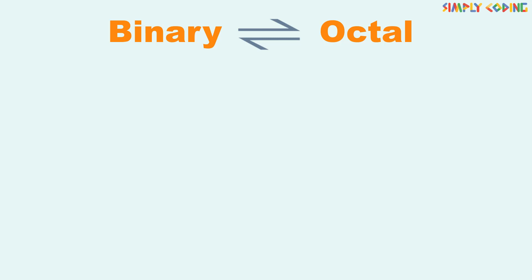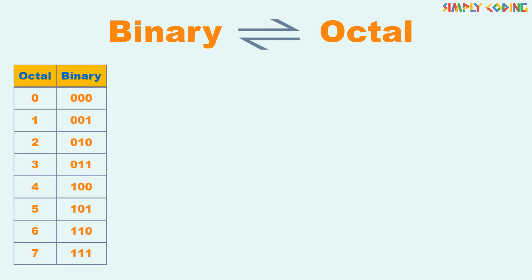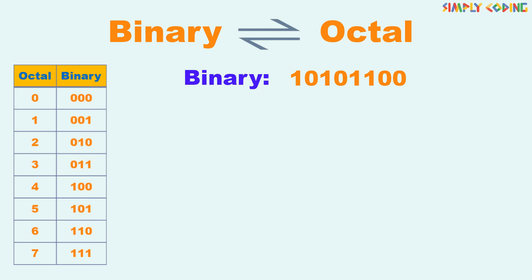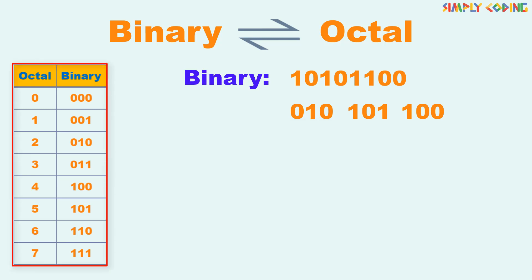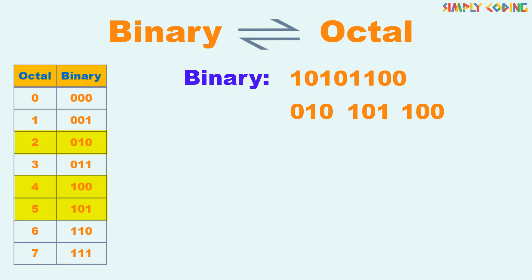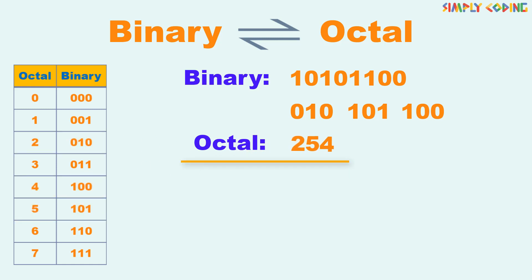Next let's learn how to convert binary to octal and vice versa. Before doing the conversion, you should know the binary equivalent for octal numbers 0 to 7 — let's note it down first. Note that each octal number is represented by 3 binary digits. Let's take a binary number which we want to convert to octal. First we split the binary values into groups of 3 starting from the right-hand side. If the last group has less than 3 digits, then just append 0 at the end. For each group of 3, consult the table to find the matching octal value and replace the groups of 3 binary digits with 1 octal value. So here the answer is 254 in octal.